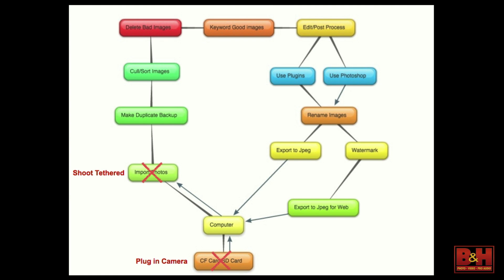Here's an expanded view of what I do every time, and the program does most of this for me. So we're not importing — there's a few things you see change there on the workflow. I don't have to put my SD card in now because I'm going to plug my camera in and tether. I get it to my computer, shoot tethered instead of importing, and then I move around, make a duplicate backup, cull or sort the images, delete my bad images.